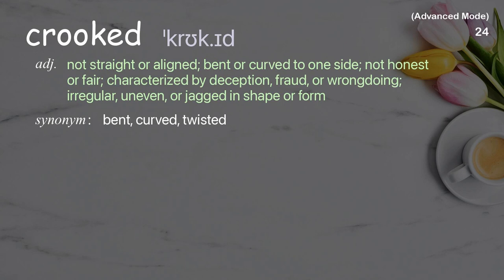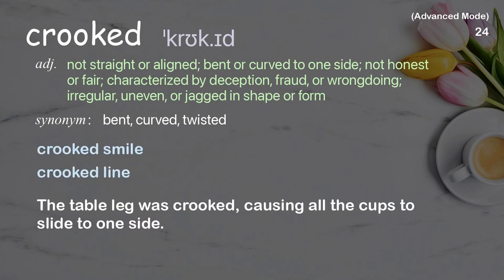Crooked: not straight or aligned; bent or curved to one side; not honest or fair; characterized by deception, fraud, or wrongdoing; irregular, uneven, or jagged in shape or form. Examples: crooked smile, crooked line. The table leg was crooked, causing all the cups to slide to one side.